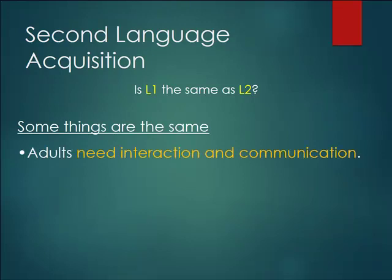Some of the things that are the same: adults need interaction and communication. Of course you can sit down with a Mongolian grammar book and a Mongolian newspaper and after several years you'll be able to translate Mongolian, but you won't be able to go into a bar in Ulaanbaatar and order a cup of coffee. You need to do that through interaction and communication.